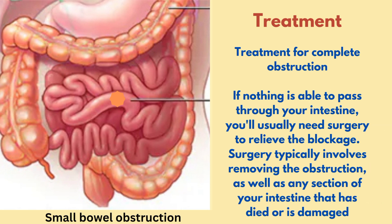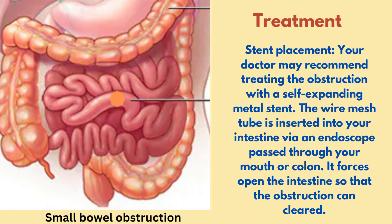For complete obstruction, if nothing is able to pass through your intestine, you'll usually need surgery to relieve the blockage. Surgery typically involves removing the obstruction as well as any section of your intestine that has died or is damaged. Another treatment option is stent placement — your doctor may recommend treating the obstruction with a self-expanding metal stent. The wire mesh tube is inserted into your intestine via an endoscope passed through your mouth or colon, forcing open the intestine so that the obstruction can be cleared.